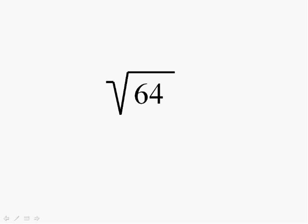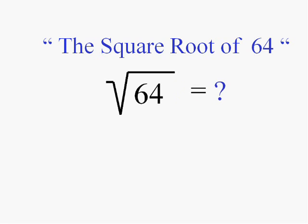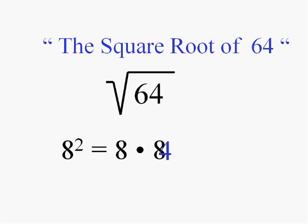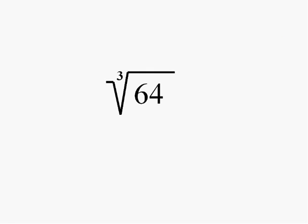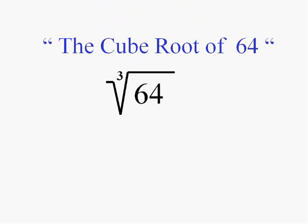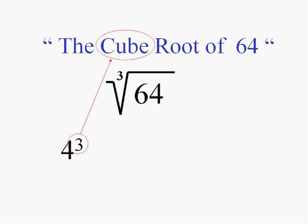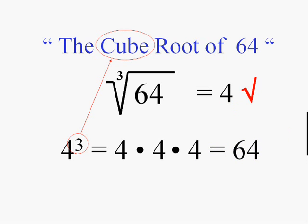When we don't write a little number up there, we say it's the square root. So that is the square root of 64, which we know is 8 — because 8 squared equals 64. What is the cube root of 64? Some number cubed. It's not 8, because 8 times 8 times 8 doesn't equal 64. How about 4? 4 times 4 times 4 — 4 cubed does equal 64. So 4 is the cube root of 64, and 8 is the square root of 64.